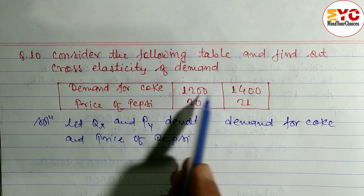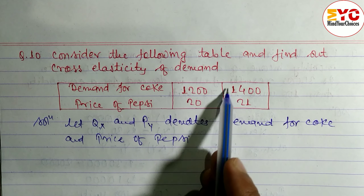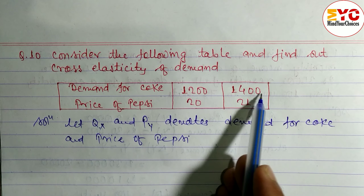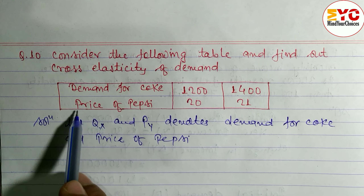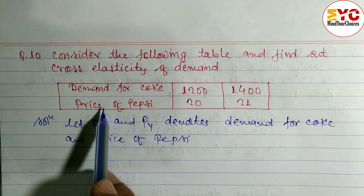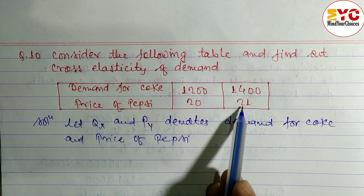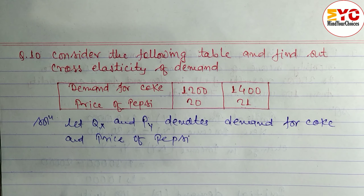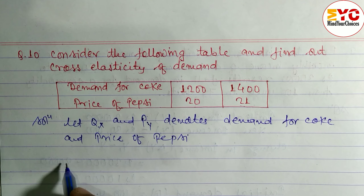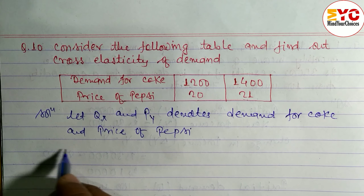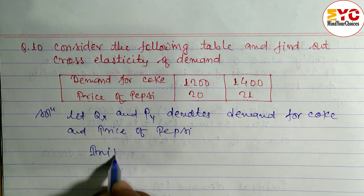Initial demand for Coke is equal to 1200, and new demand for Coke is equal to 1400. The initial price of Pepsi is 20 and the new price is 21. When the price of Pepsi increased, the demand for Coke also increased.